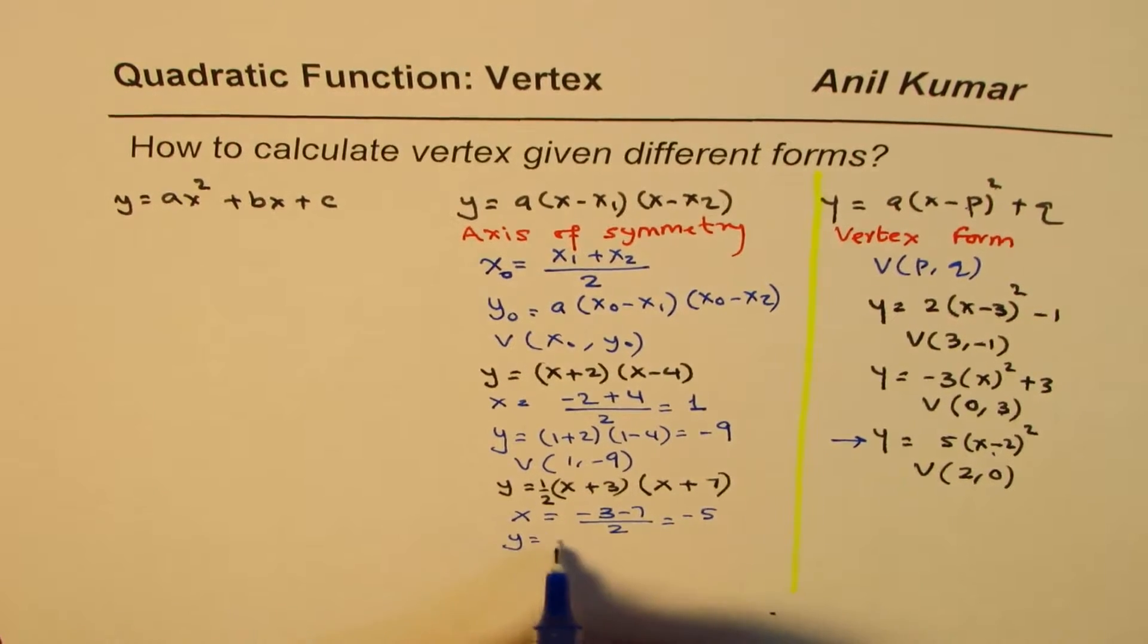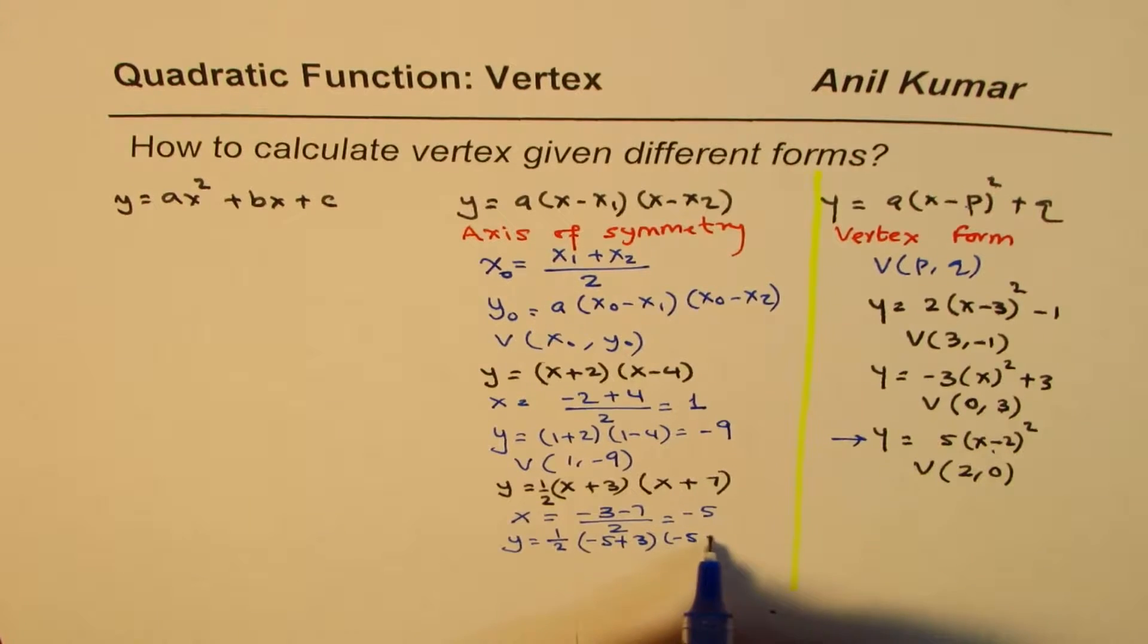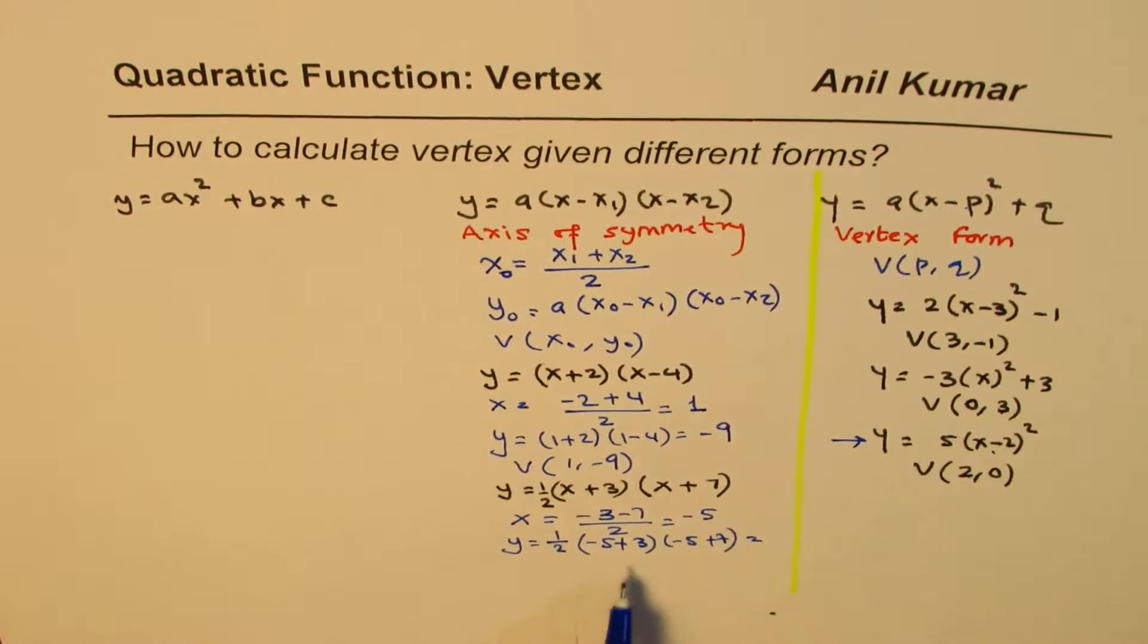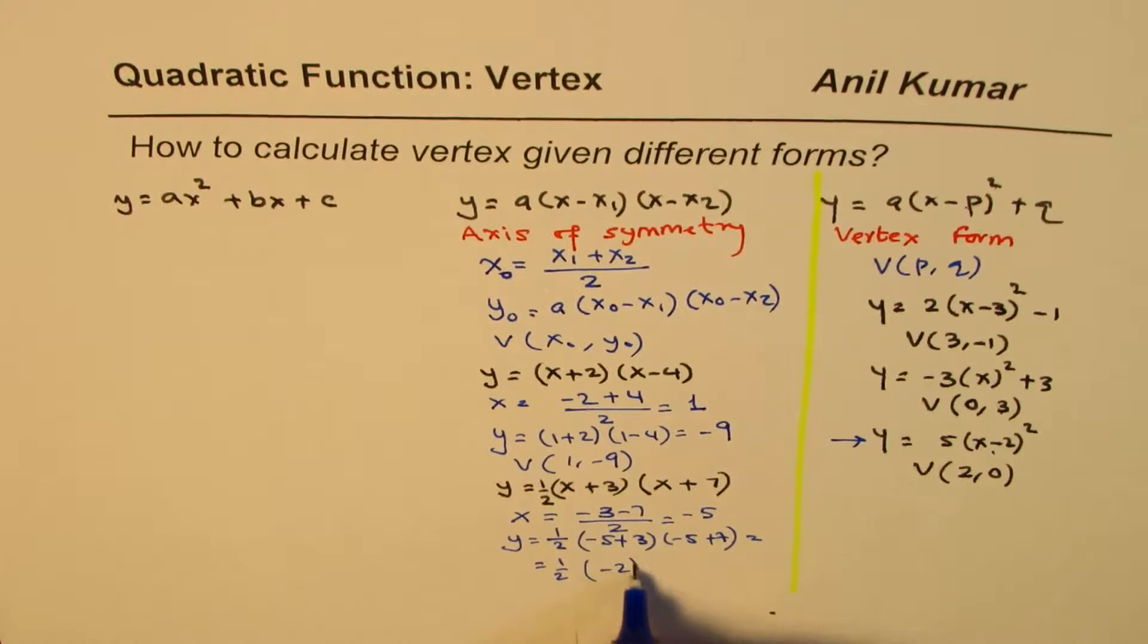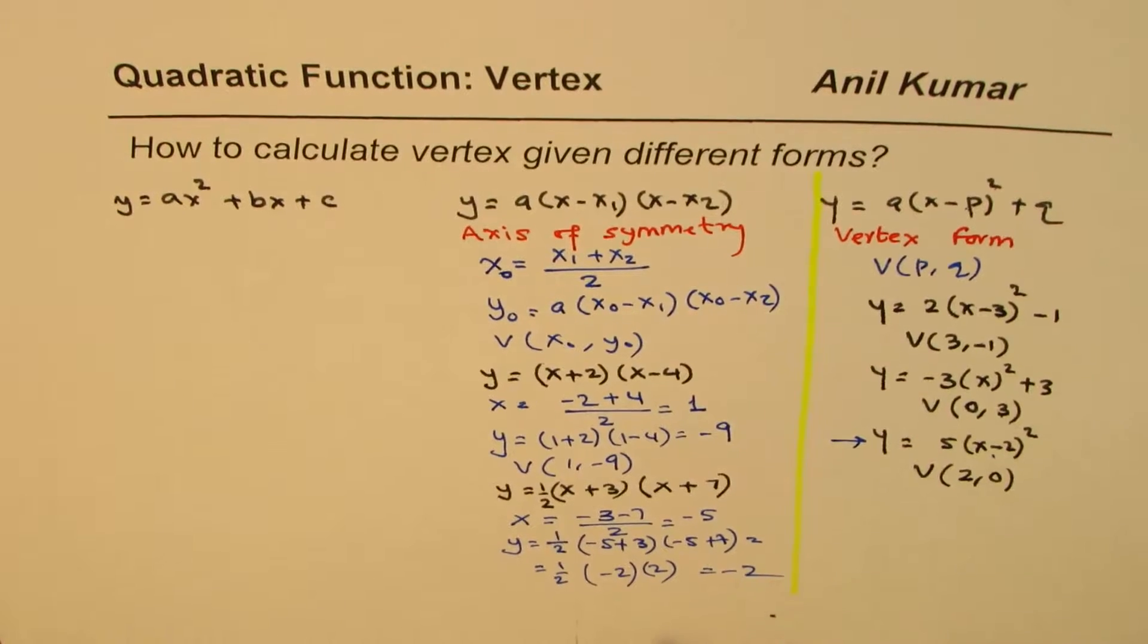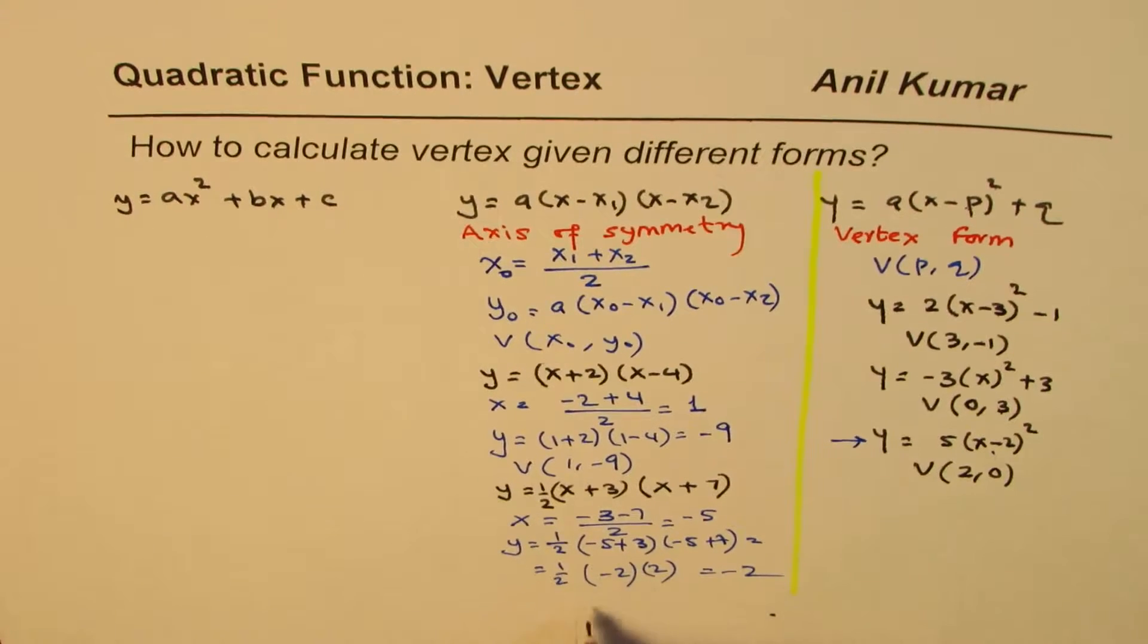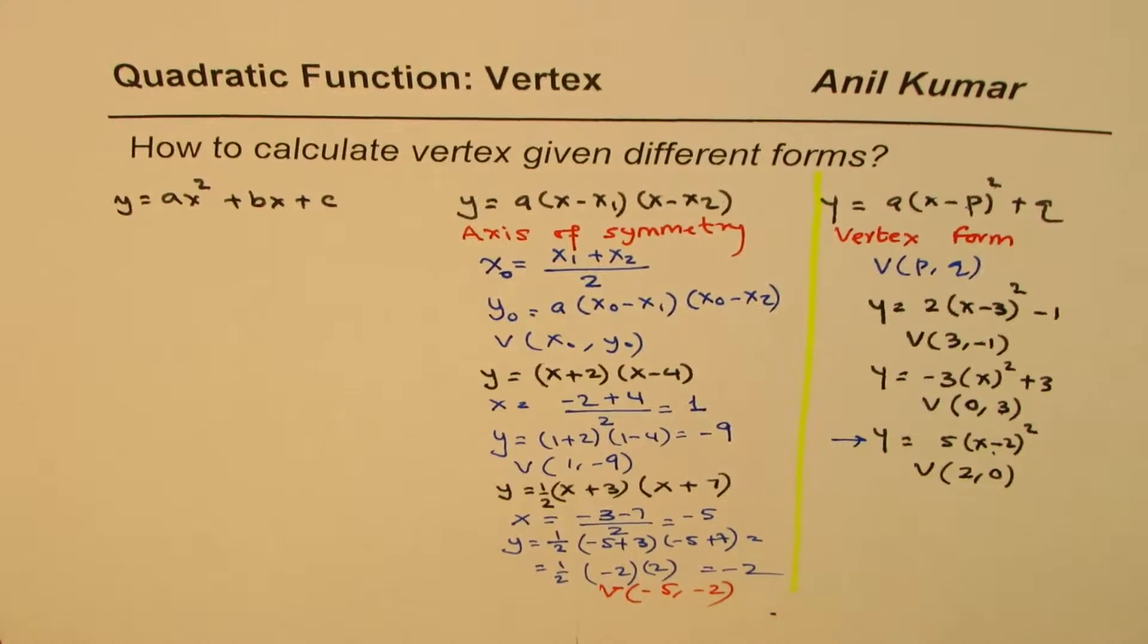Substitute minus 5 here to find y, which is half times (minus 5 plus 3) times (minus 5 plus 7), and that is minus 2. So let me do one more step here. So this is minus 2 times that is plus 2 and this cancels. You get minus 2 as your answer and the vertex in this case is x value is minus 5, y is minus 2.